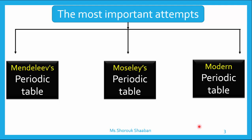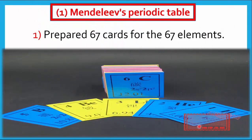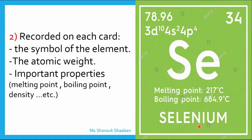Let's start with Mendeleev's periodic table. When Mendeleev tried to classify the elements, there were only 67 elements and he was the first one to attempt this. He prepared 67 cards for these 67 elements. He made 67 cards and wrote some important details on each card: number one, the symbol of the element — for example, selenium has the symbol Se — number two, the atomic weight, and number three, some important properties like melting point, boiling point, and density.